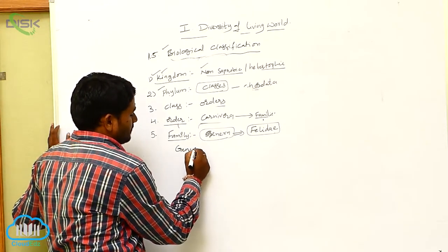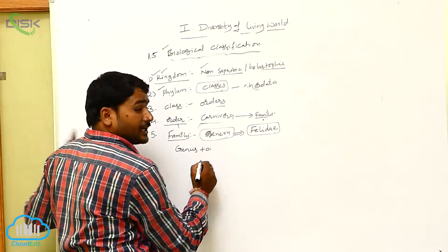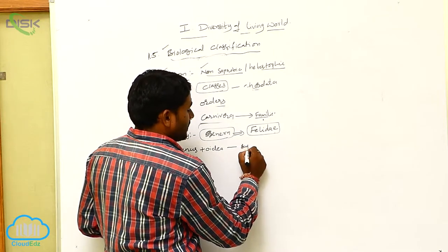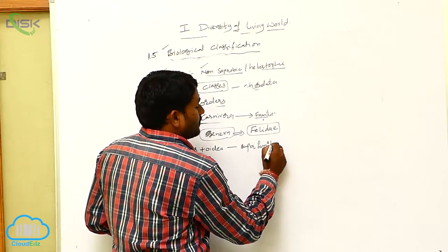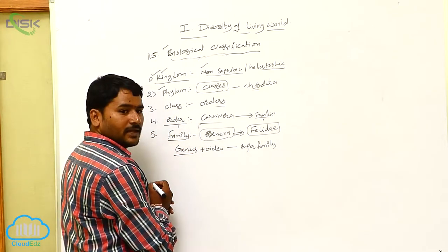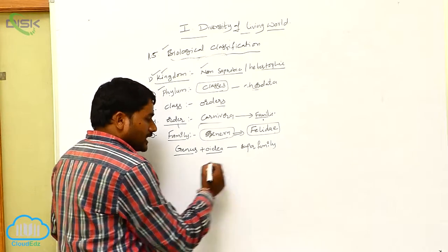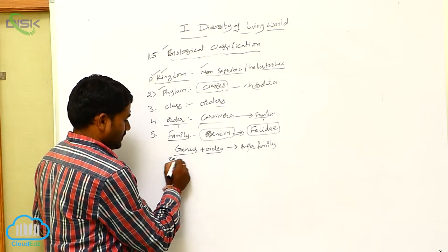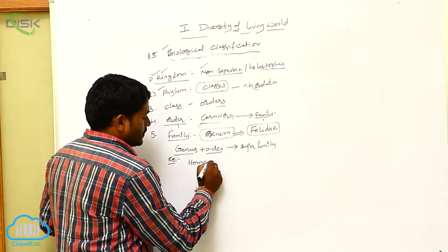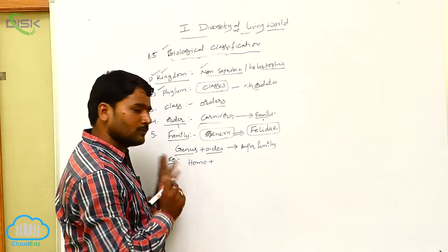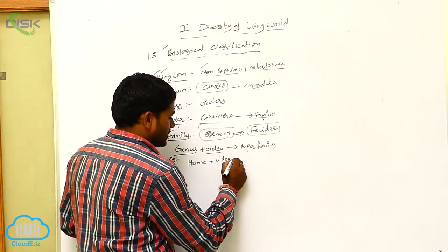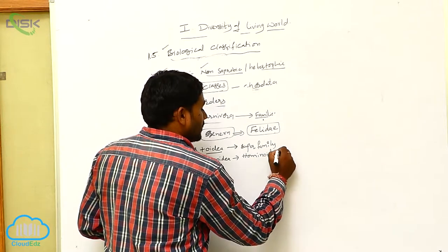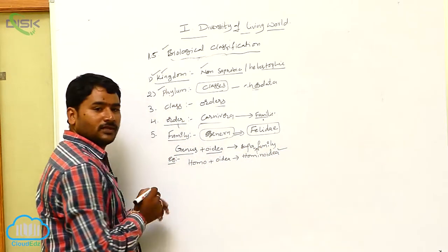Generally, one genus plus the suffix -oidea gives you the super-family. For example, Homo — the genus of human beings — plus -oidea gives you Hominoidea. So Hominoidea is the super-family of man.